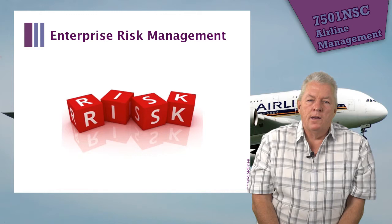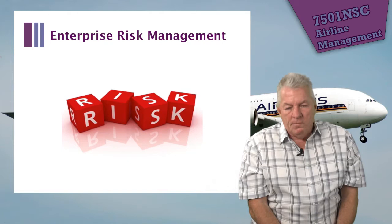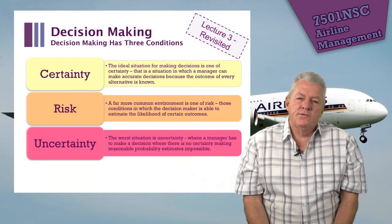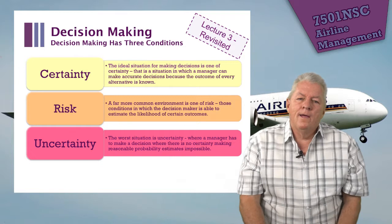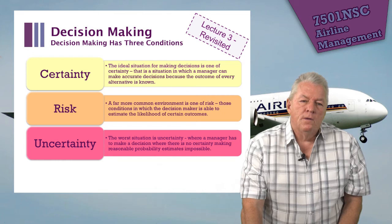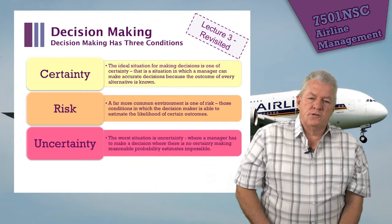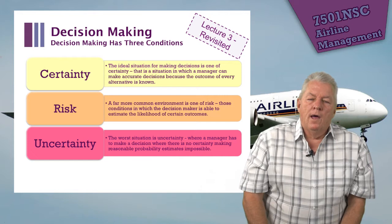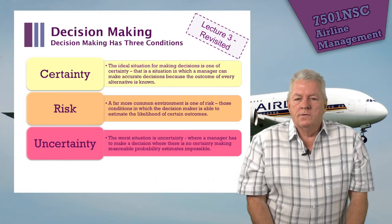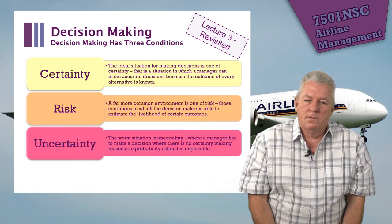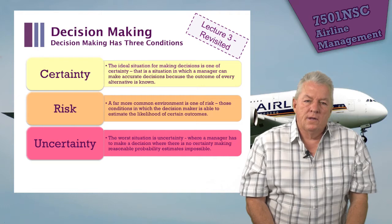Let's now move on to enterprise risk management. Going back to lecture three on decision-making, we said decision-making has three conditions: certainty — the highly desirable state; uncertainty — the worst situation because you don't have all the facts; and risk — which is what this lecture is about. It's about enterprise-level risk, at the organisational level, where the decision-maker is able to eliminate the likelihood of certain outcomes. The idea is to understand the risk, identify it, and mitigate it.